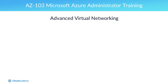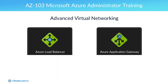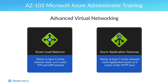It also covers advanced virtual networking. An important part of this section is showing different ways to distribute an application's load across multiple VMs. One method is to use Azure Load Balancer, and another is to use Azure Application Gateway. Azure Load Balancer works at layer 4 of the network stack, so it routes TCP and UDP packets. Azure Application Gateway works at layer 7, which is the application layer, so it routes at the HTTP level. This gives it the ability to do more than Azure Load Balancer.